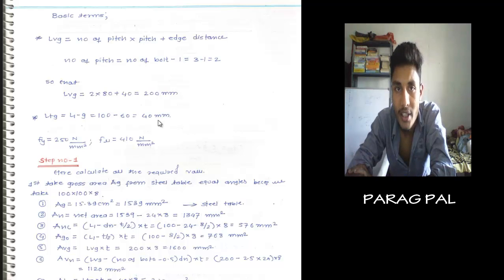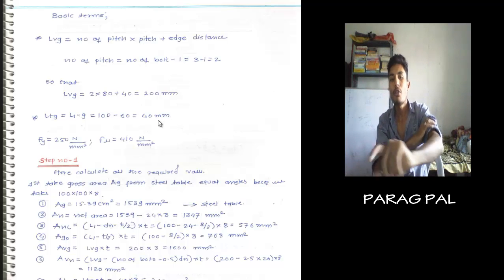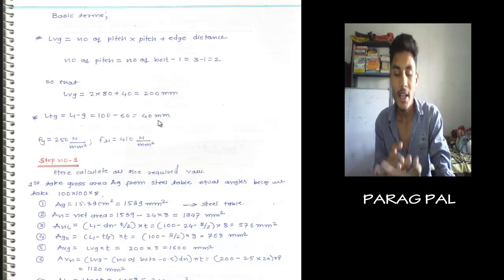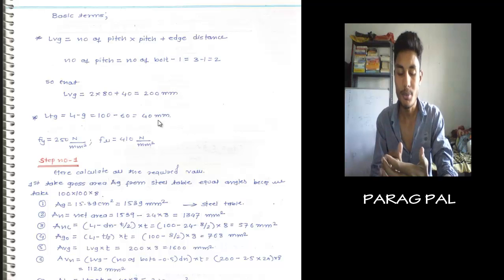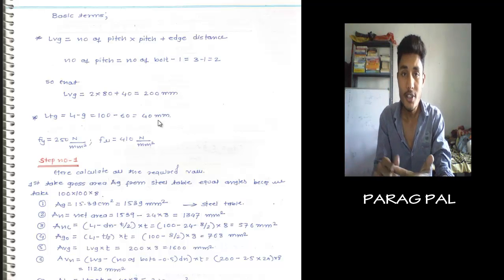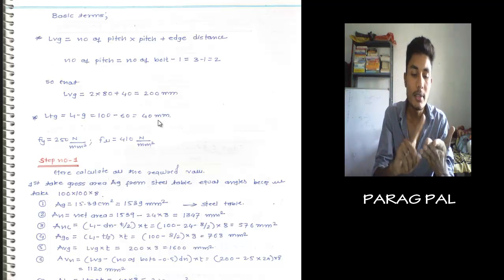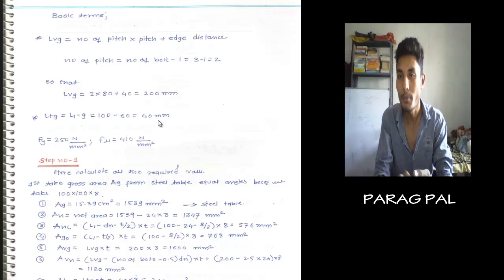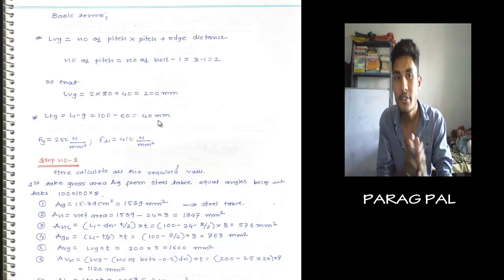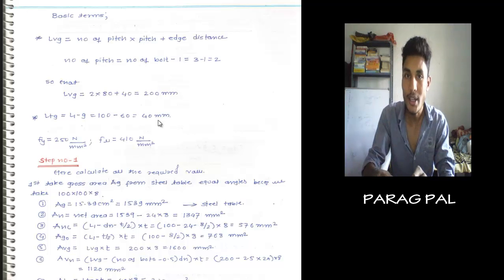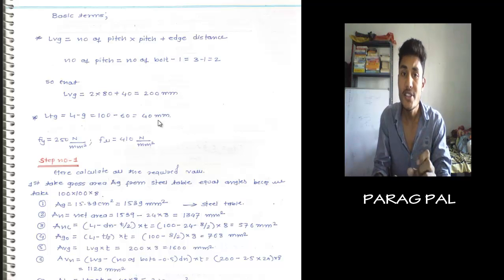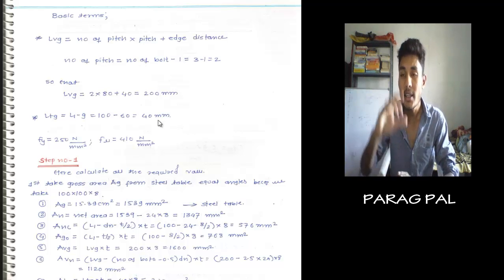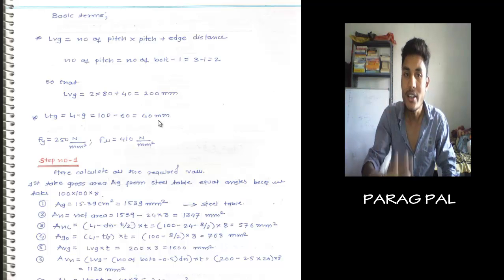LVG and LTG are key terms. LVG means the number of pitches times pitch plus edge distance H on one side only, not both sides. If three bolts are provided, then there are two pitches, so number of pitch is 3 minus 1 equals 2. So LVG equals number of pitch into pitch plus H distance. LTG is very easy: LTG equals L1 minus G.